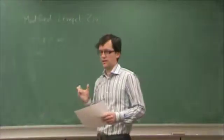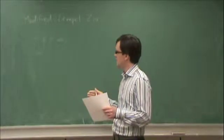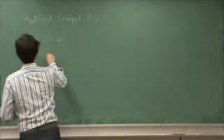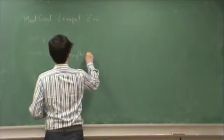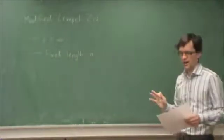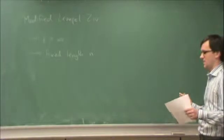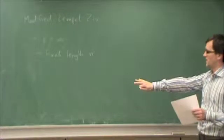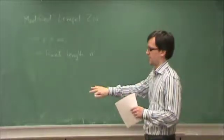Instead of looking for the longest length that has occurred, we're going to fix the length. So in other words, we're going to basically partition the source into blocks of n bits, and every n bits, we'll look through history to find the time that that sequence has already occurred.